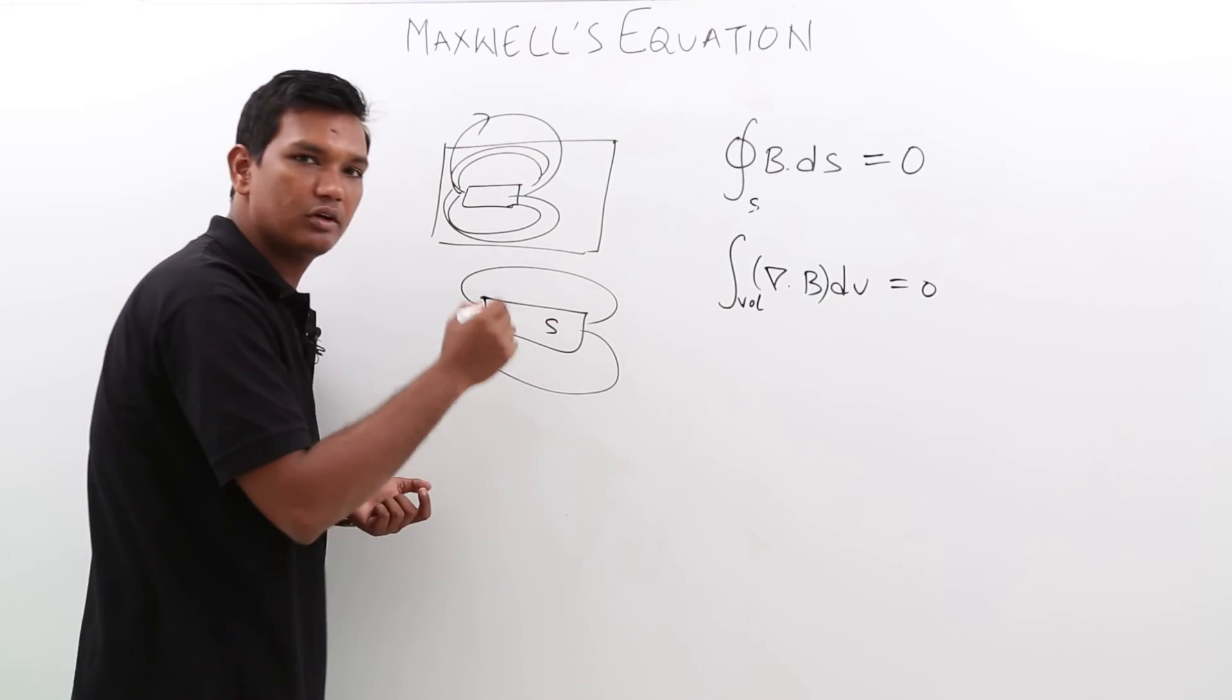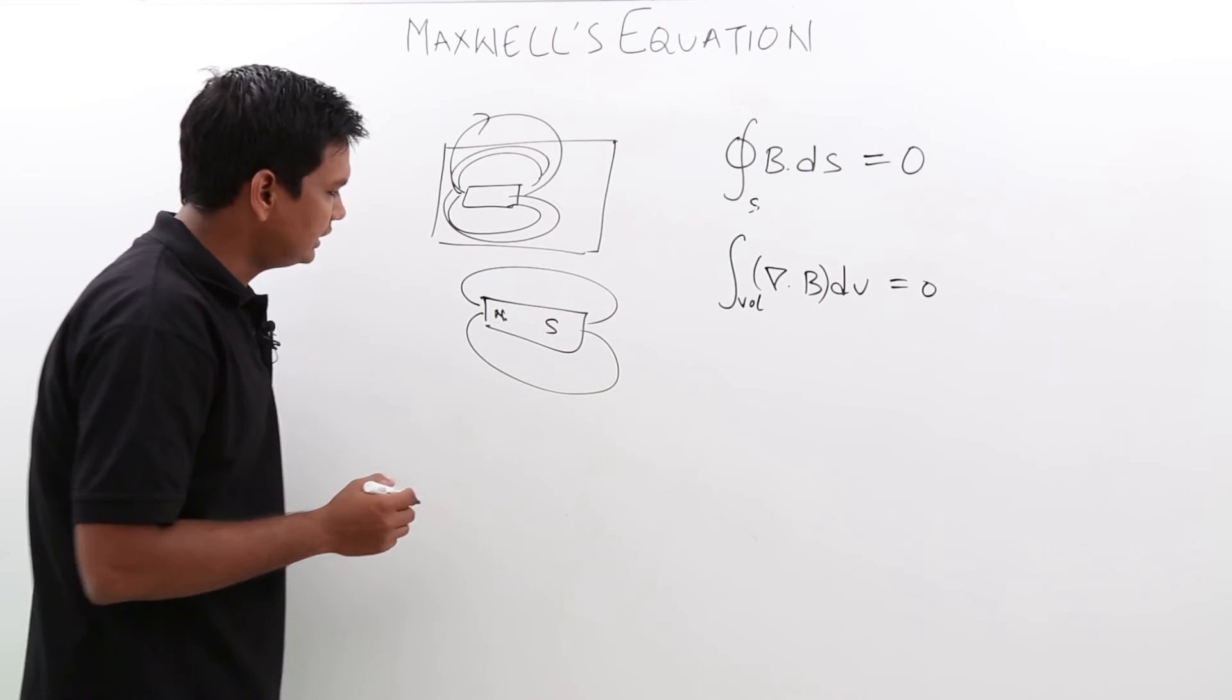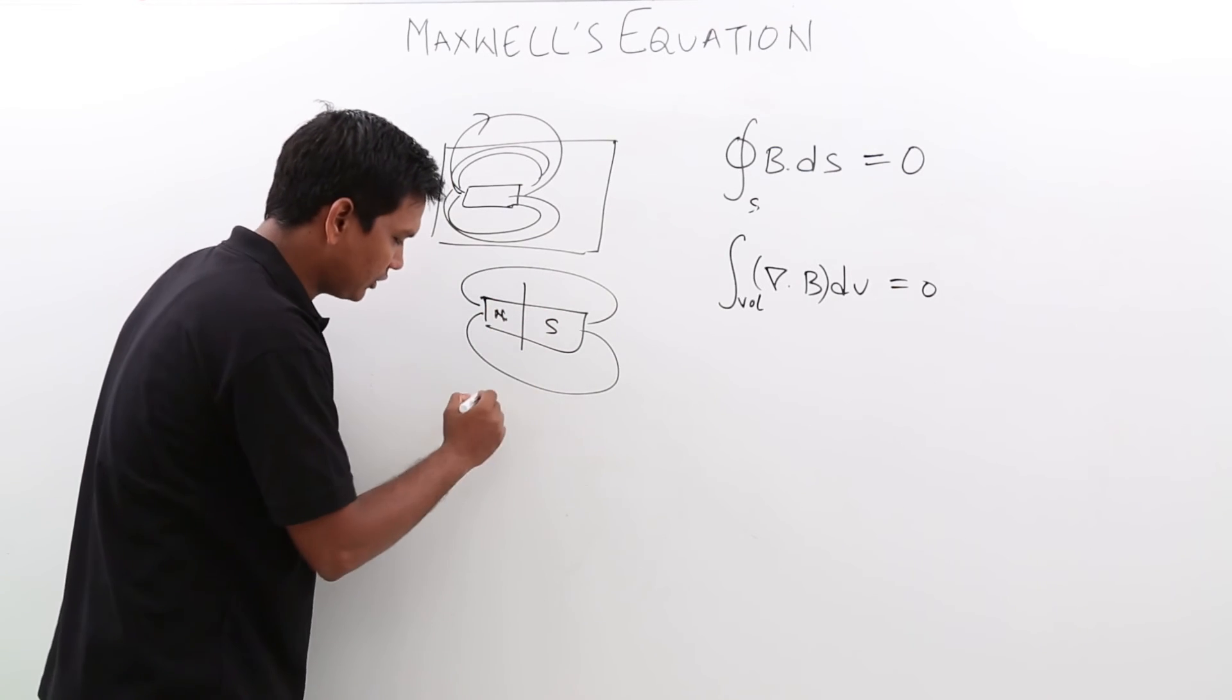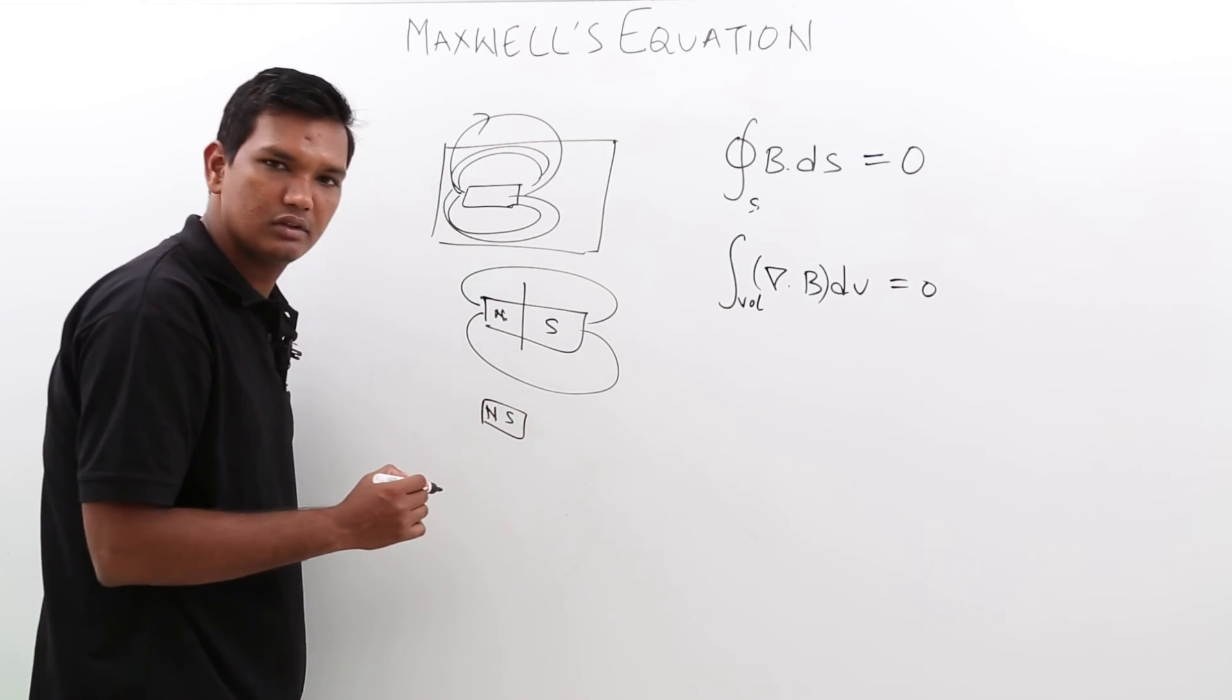So it will start from north, it ends in south. Now, in that case, if you break the magnet also, the small piece will again have north and south, right?